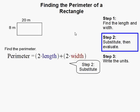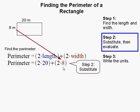Now what we need to do is substitute. We have 2 times 20 plus 2 times 8, because 8 is our width and 20 is our length.